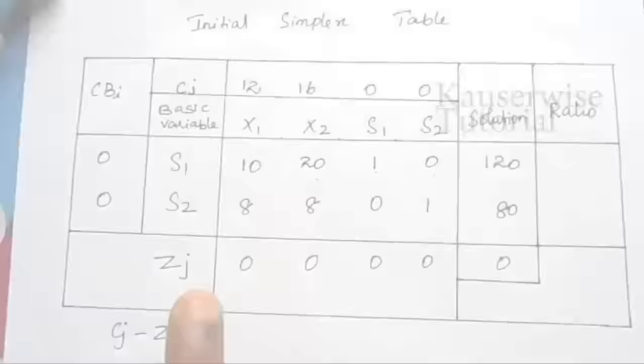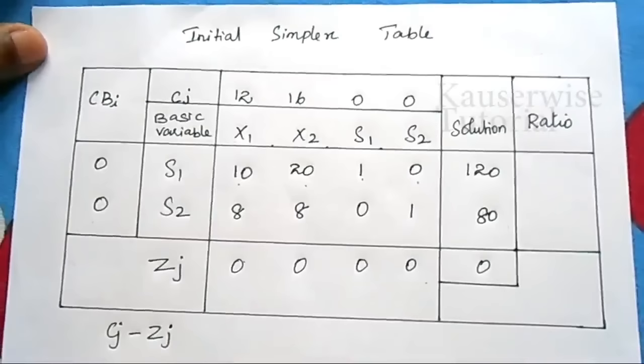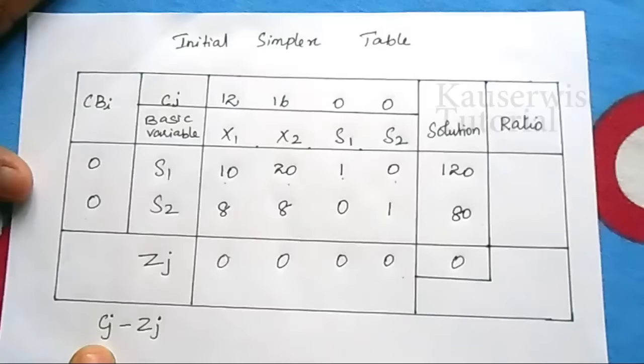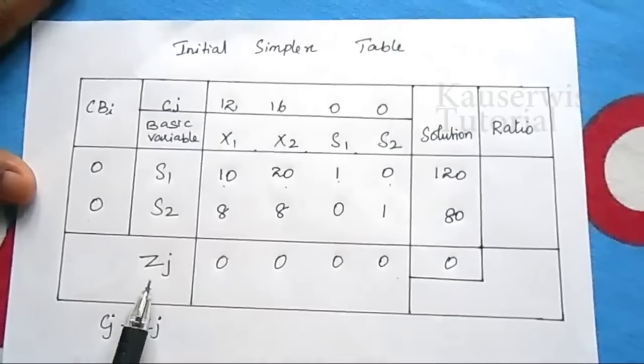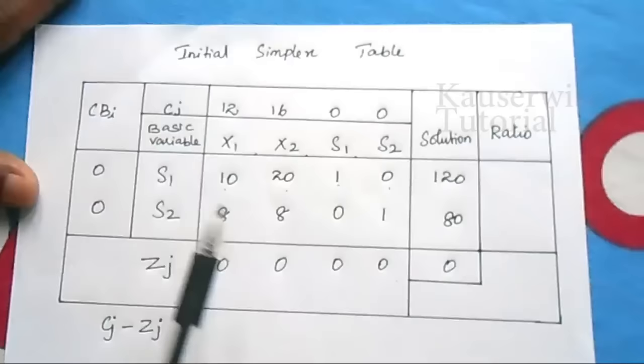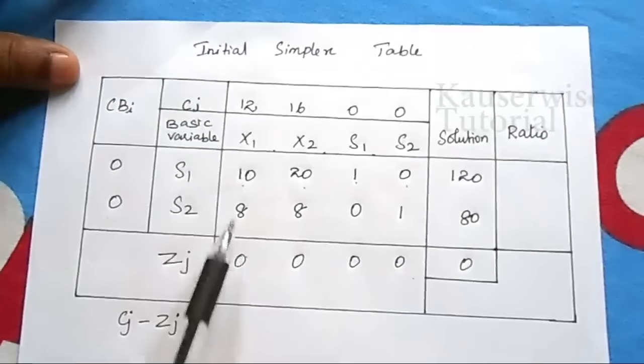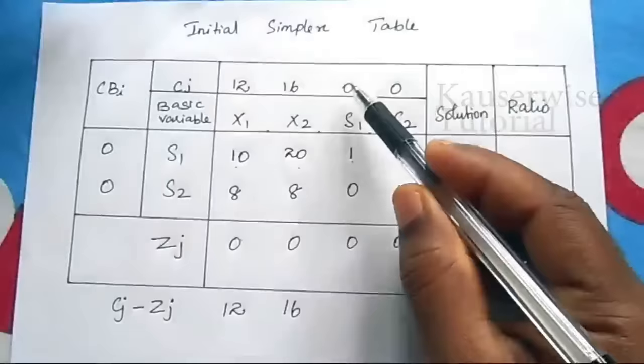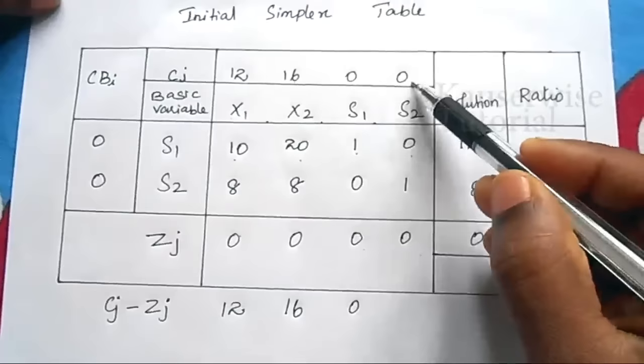After finding zj, we need to compare cj and zj. The formula is cj minus zj. cj values are 12, 16, 0, 0 and zj values are all 0. So: 12 minus 0 equals 12; 16 minus 0 equals 16; 0 minus 0 equals 0; 0 minus 0 equals 0. The cj minus zj values are 12, 16, 0, 0.